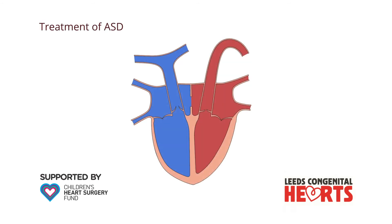An atrial septal defect can be closed in one of two ways: either with open-heart surgery or in a keyhole procedure. Many ASDs are suitable for treatment via the keyhole procedure, but some require open-heart surgery. Here, we explain the open-heart surgery technique, but we have a separate video explaining the keyhole procedure.